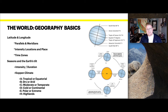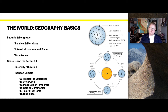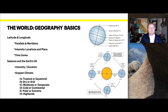We will be making reference to the Köppen climate classification, specifically the major categories. Climates will be referenced as A, B, C, D, E, or H. An A-type climate is tropical or equatorial. B-type is dry or arid. C-type is moderate or temperate — for example, Santa Clarita where I live is a C-type climate. D is cold and continental. E is polar and extreme. And H is highlands.